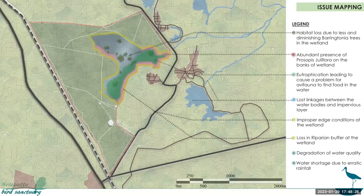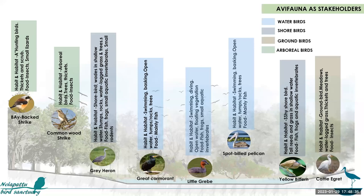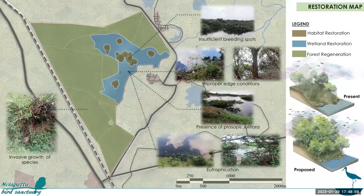I've started by mapping issues at a macro level and then addressing each in particular. Although ecotourism and agritourism are part of my focus, the main stakeholders were the birds. I've tried to understand their habits, habitat, and food chain — water birds, arboreal birds, and ground birds — to address all their needs. This is my restoration map, divided into three parts: habitat, wetland, and forest. I've addressed insufficient breeding spots, improper edge conditions, presence of Prosopis juliflora along the banks, and eutrophication. For the guideline stage, I've given guidelines for wetland restoration: diverting water runoff from adjacent paddy fields to the wetlands, treating edge conditions with riparian buffer to attract more butterflies and birds, and proposing a two-stage ditch to avoid flooding and allow water to persist for a longer term.